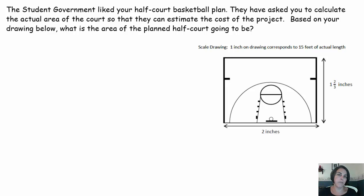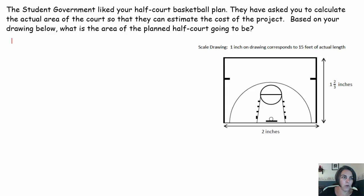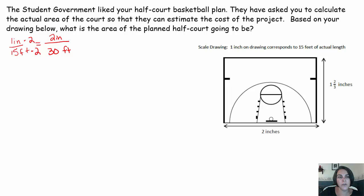The first method is my preferred method. I like to take my length and width on my scale drawing and convert that to the actual length and width, then apply the area formula. From my drawing, one inch is 15 feet. My length is two inches — one times two is two, 15 times two is 30 — so two inches equals 30 feet on the actual basketball court.